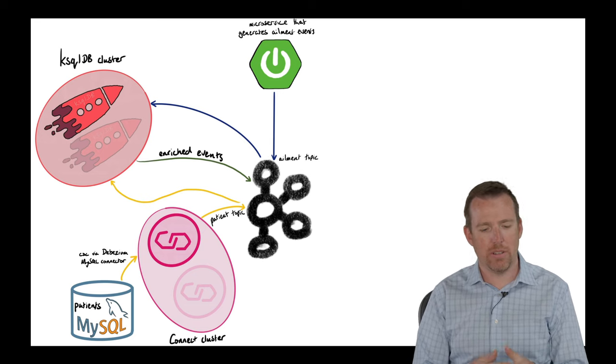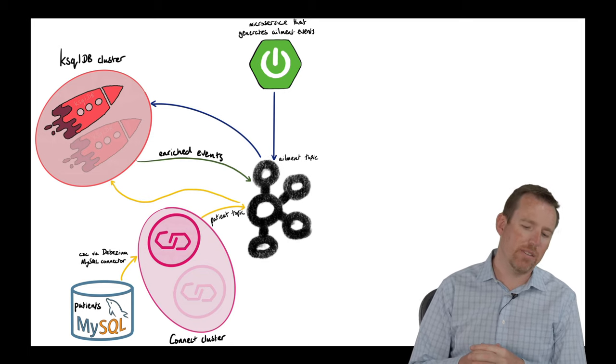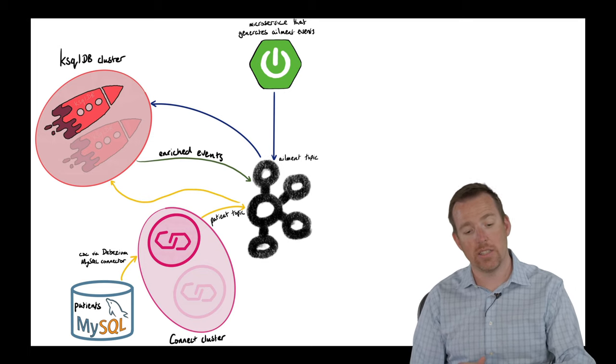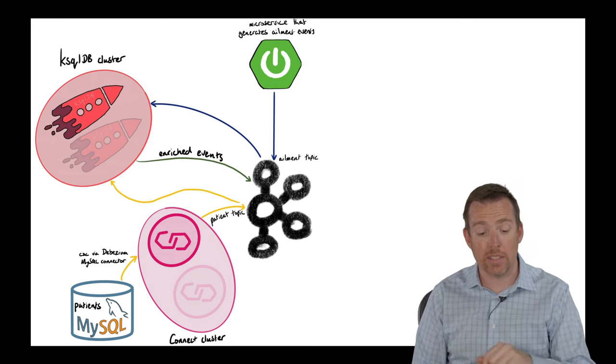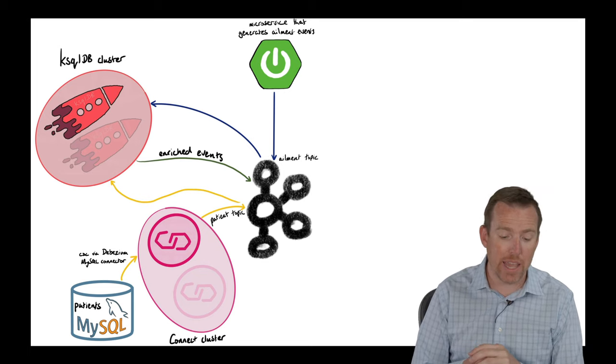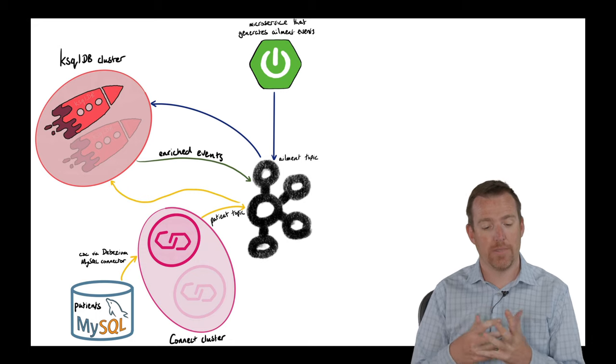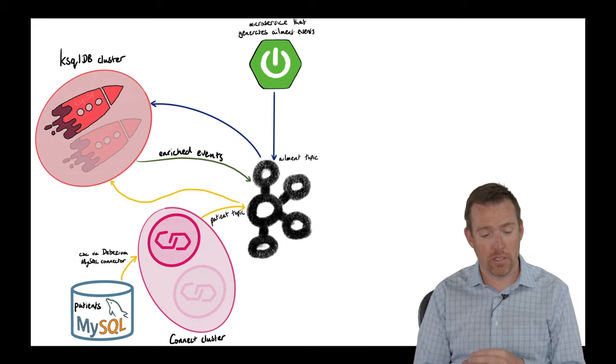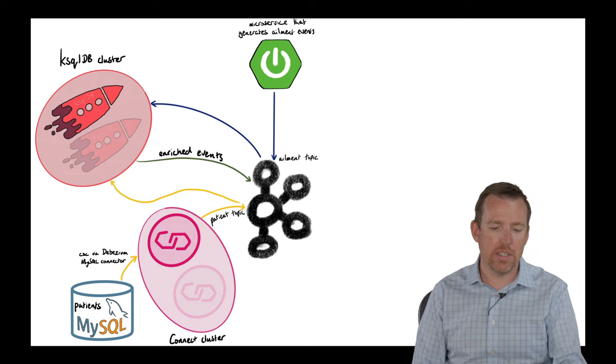So again, this is the big picture. We've got Debezium pulling data out of MySQL using the connect cluster. Note that there are pairs of things. There's a pair of ksqlDB nodes. There's a pair of connect nodes, and the reason for that is for fault tolerance.